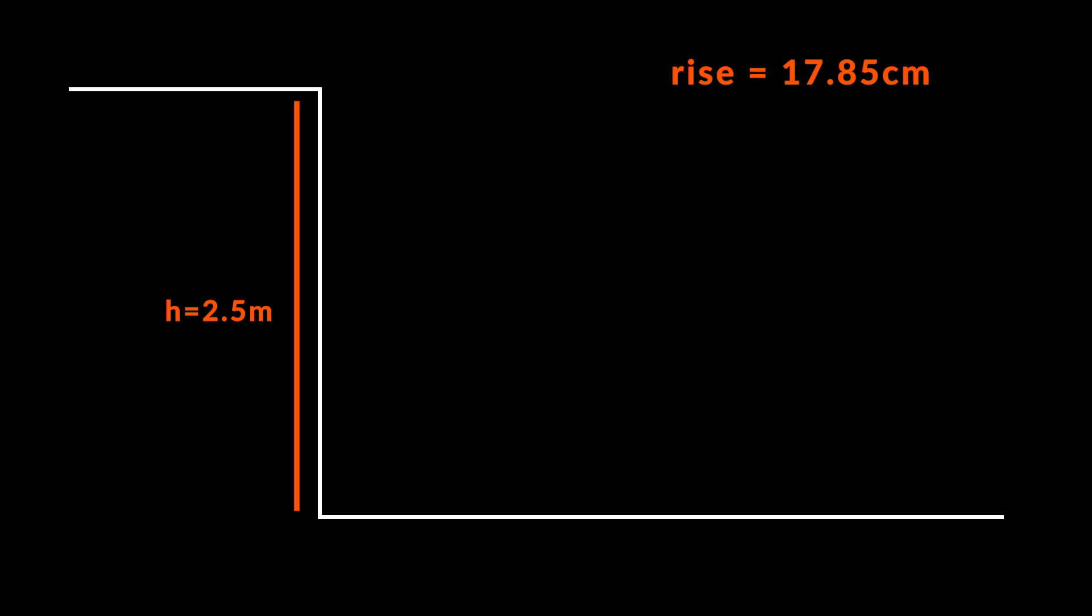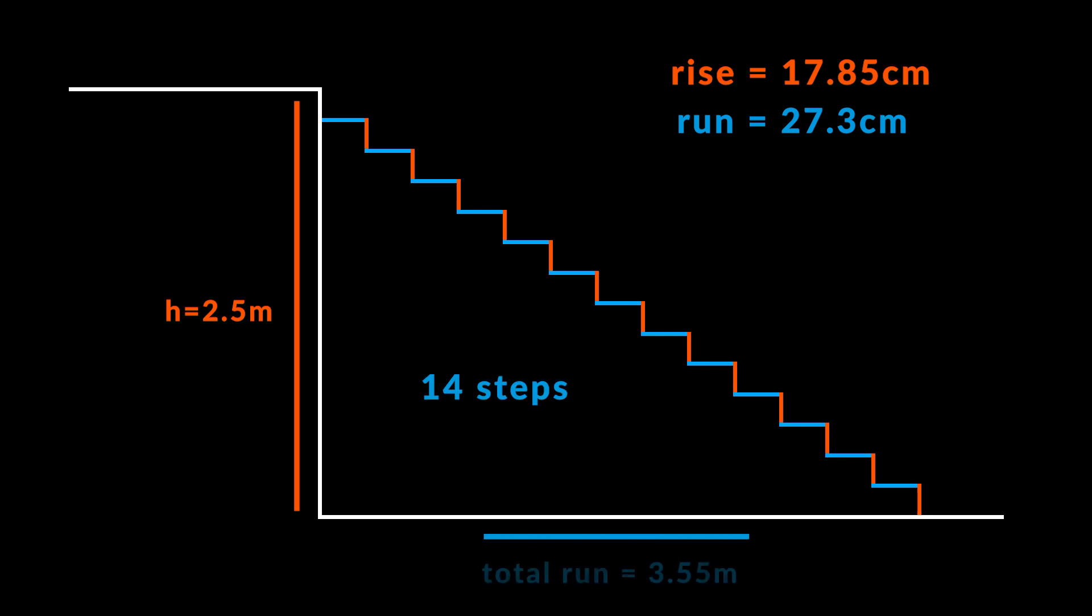In order to have a good ratio between the run and the rise, we'll apply the Blondel formula, replacing the rise by 17.85 centimeters. This will give us a run or length of 27.3 centimeters. After finding the run and rise values, we are able to build a stair. In this case, the stair will have a total run of 3.55 meters.